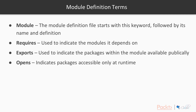Let's think about some common module definition file terms. Firstly, we have the module keyword — the definition file starts with this keyword followed by the module's name and then the rest of the definition. We also have the requires keyword, used to indicate the modules that a file depends on. Next we have exports, used to indicate the packages within the module that are available publicly. And lastly, we have opens, which indicates packages that are only accessible at runtime, not those statically available at compile time.